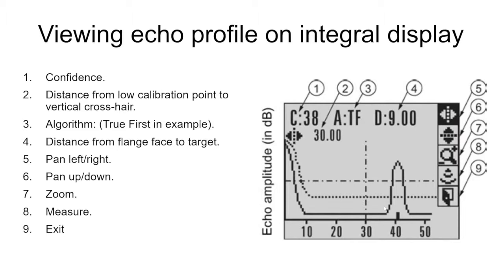To the right of that we have ATF. This is showing us that the algorithm is true first and that's going to be default, but depending on the application we may need to change that. To the right of that it shows D 9.00, telling us that the distance from the sensor flange or reference gauge is 9 feet away.